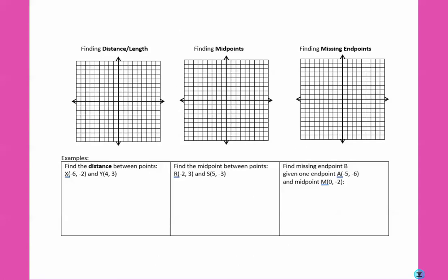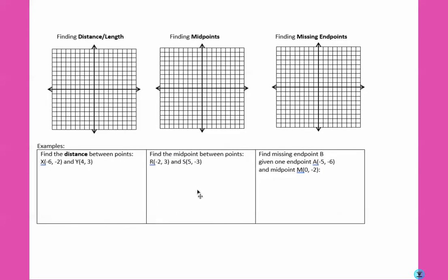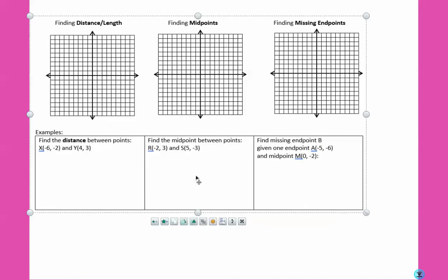A big hint that you need to use graph paper on your Geometry SOL is any time you see coordinates like negative 6, negative 2, 4, 3, negative 2, 3, 5, negative 3. All those things we want to start graphing these items.